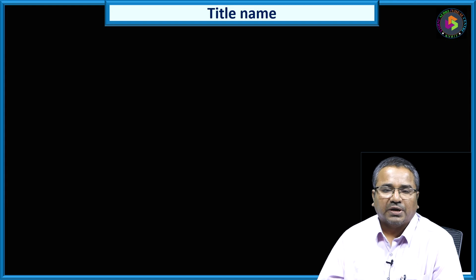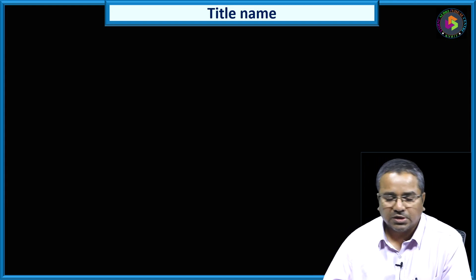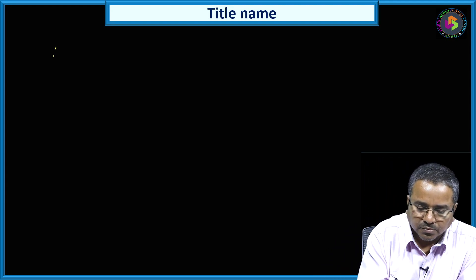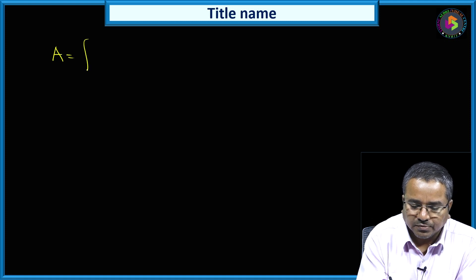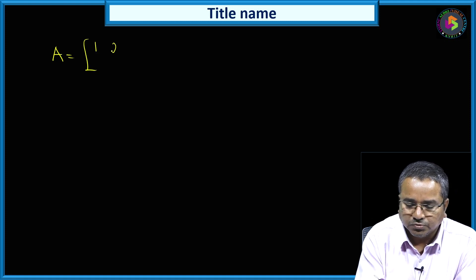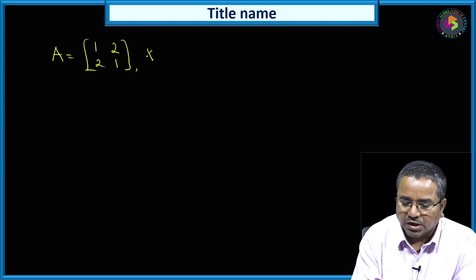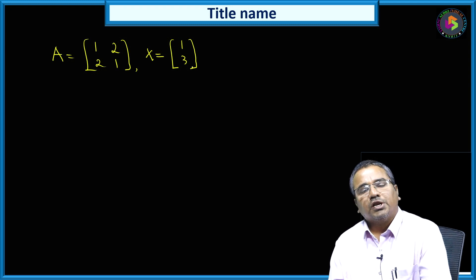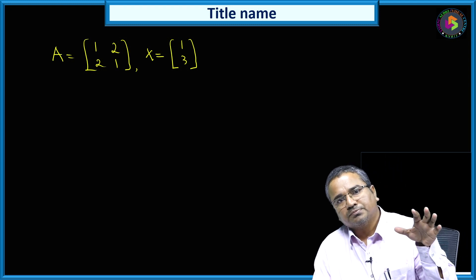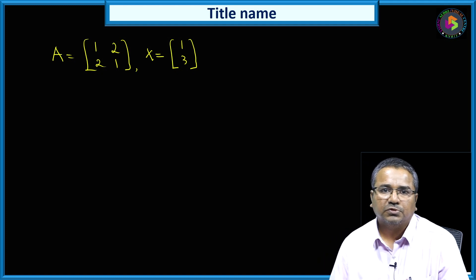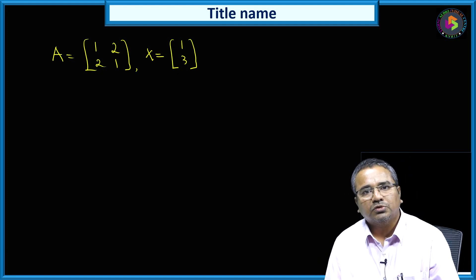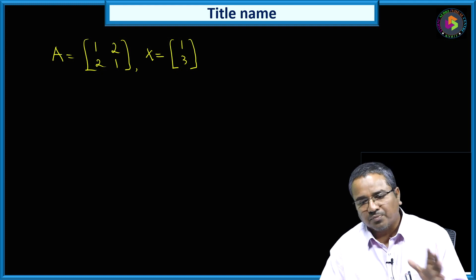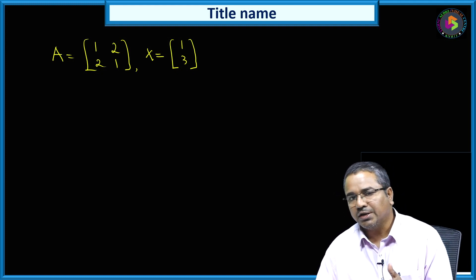We will start the class by taking an example. Let us consider A is a 2 by 2 matrix: 1, 2, 2, 1. Then I will consider one vector x = [1, 3]. Generally, what happens when the matrix acts on the vector — the vector gets transformed into a new vector. I am plotting the graph for better understanding and interpretation.